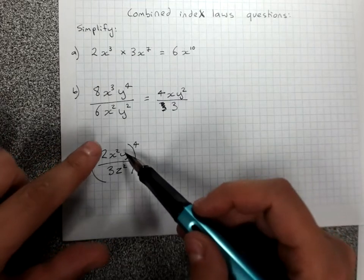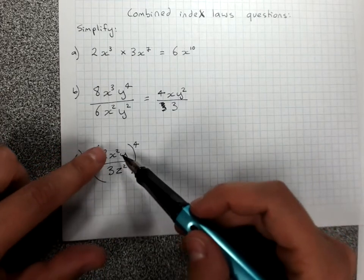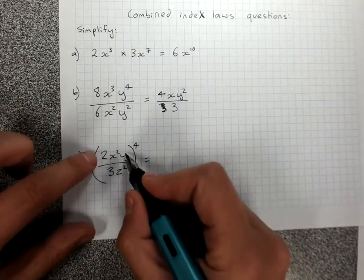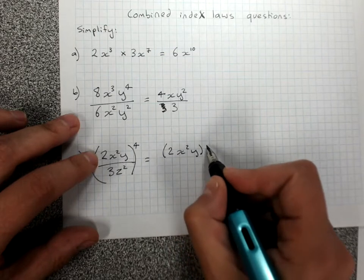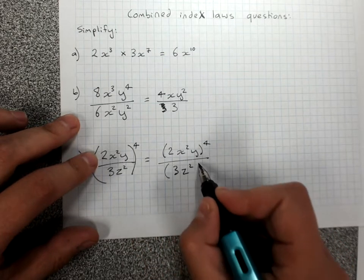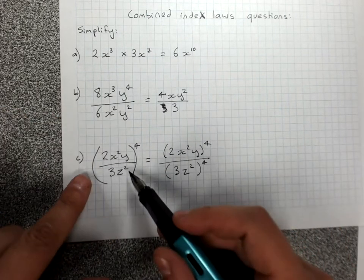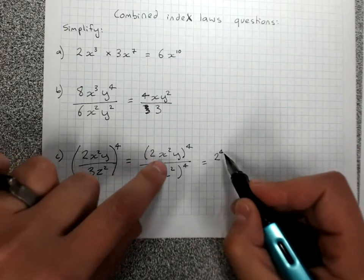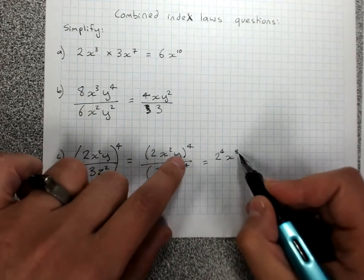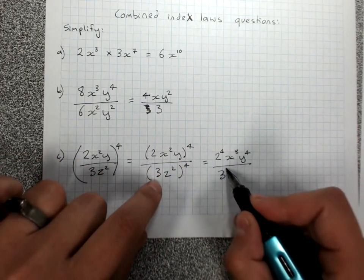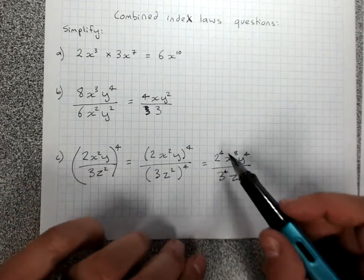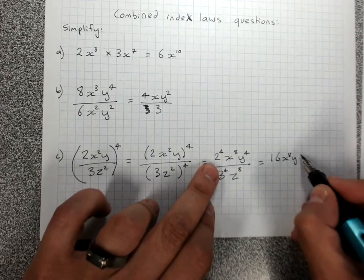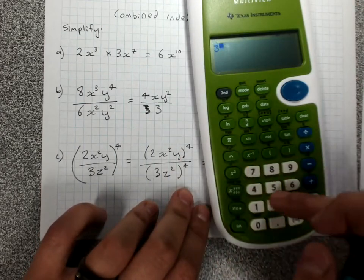The last example: I've got a fraction in brackets to a power — that's law 5. But I've also got products in the fraction, so that's law 4 as well. I'll put the top to the power of 4 over the bottom to the power of 4 — that gets rid of the fraction problem. Then I treat each part as a law 4 problem and expand: 2 to the power of 4, x to the power of 8, y to the power of 4 on the top; 3 to the 4 and z to the 8 on the bottom. Evaluate the numbers: 2 to the 4 is 16, and 3 to the 4 — grab the calculator — is 81. So the final answer is 16x⁸y⁴ over 81z⁸.